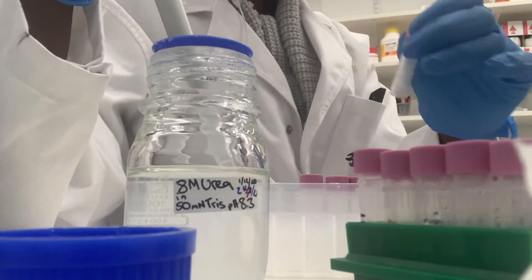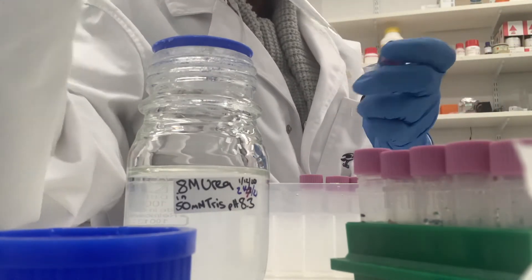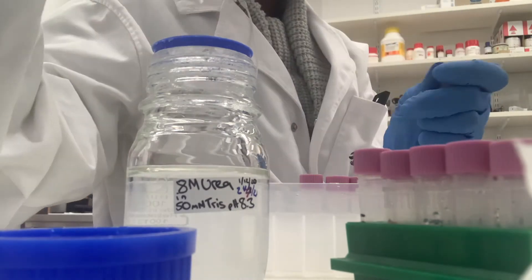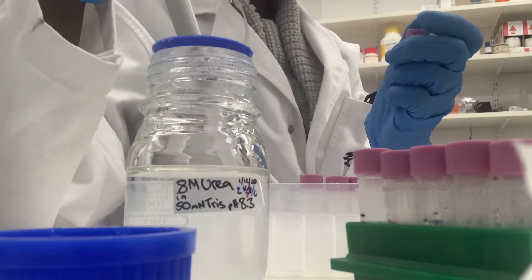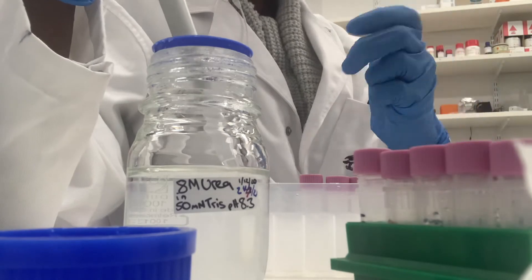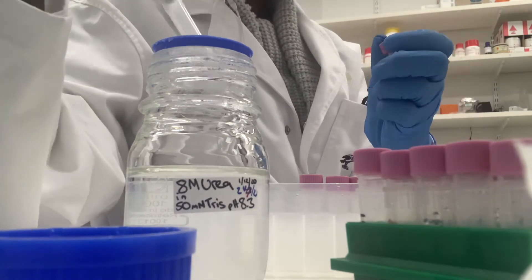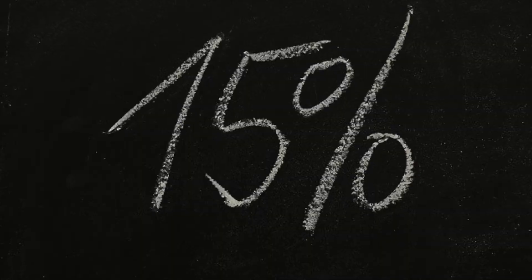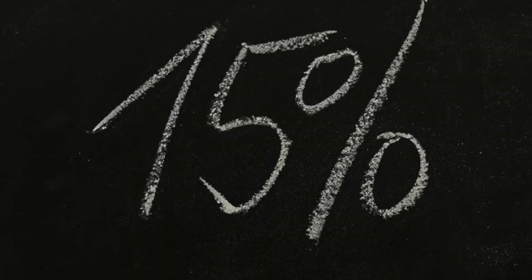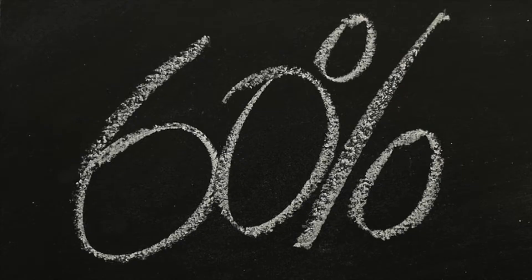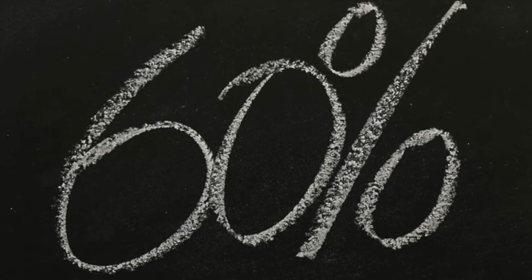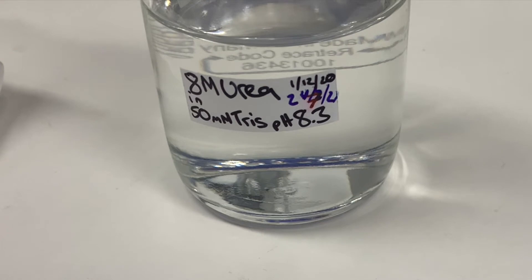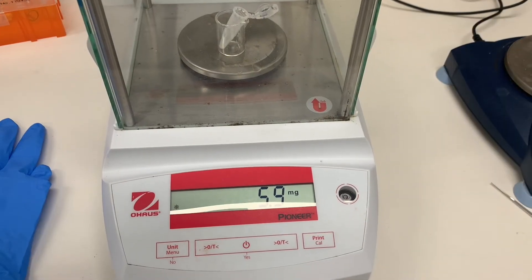A lysis buffer will have components that break open a cell — either in a gentle way so that you only break open specific components of the cell, or in a harsh way that breaks everything open because you're going to extract everything. In these scenarios you often need to make the reagent, and it may be communicated in terms of a percent solution or a molar concentration.